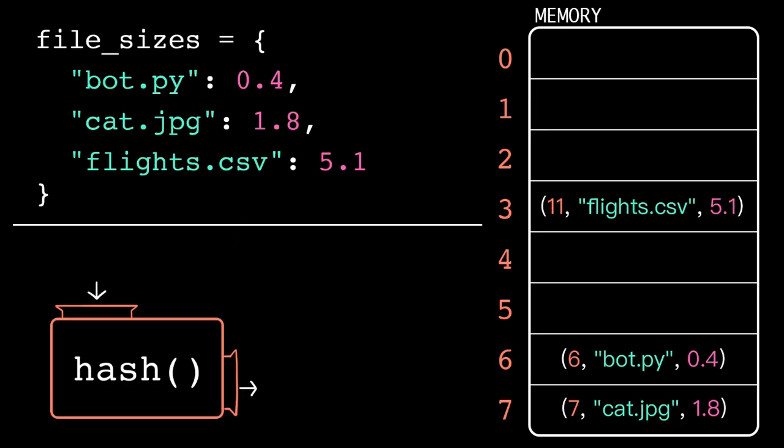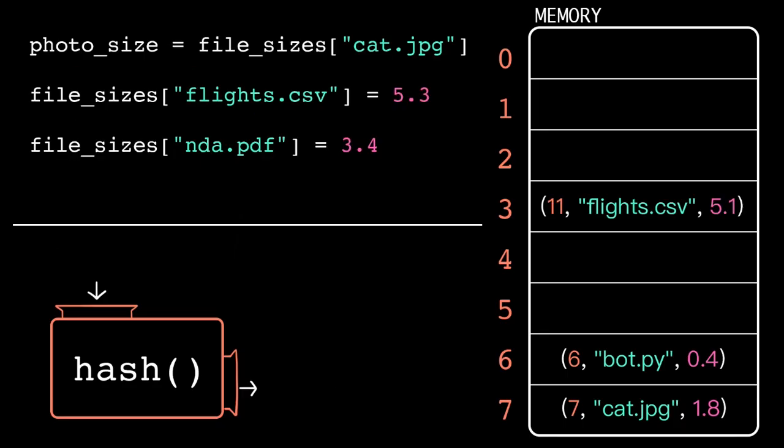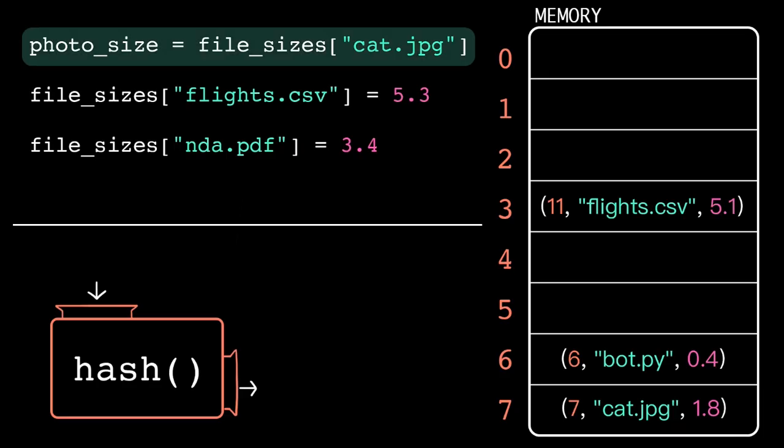Now that we have our dictionary defined, let's trace through a few accesses and updates. The right-hand side of this assignment statement accesses the value associated with the key cat.jpg. So, the computer passes the key, cat.jpg, into the hash function. And then it takes modulo 8, since there are 8 slots. That gives us the index 7.